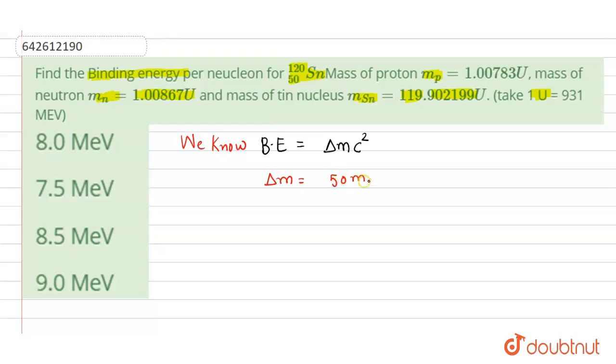50 times mass of proton plus its number of neutrons, 120 minus 50, that will be 70 times mass of neutron, minus given mass of tin. So on solving this value: 50 times 1.00783 minus 70 times 1.00867 minus 119.902199.